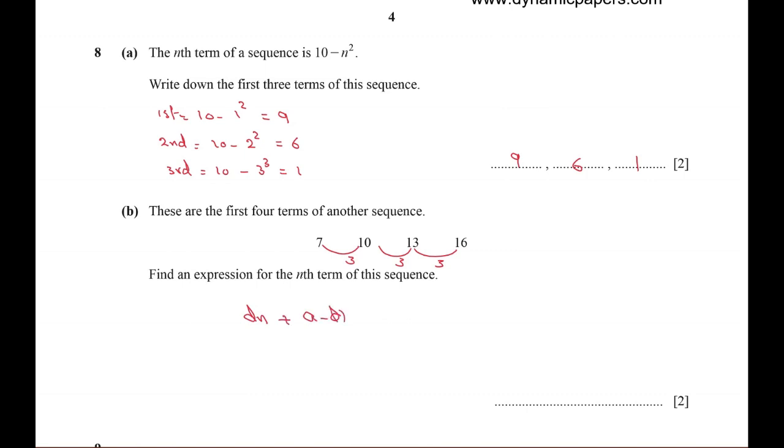dn means 3n, plus a minus d means 7 minus 3, which is equal to 4.